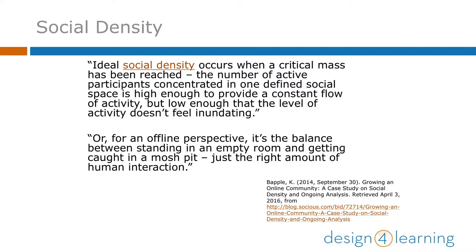I really like this definition from a blog post by Katie Bappel, so let me just read it here. Ideal social density occurs when a critical mass has been reached. The number of active participants concentrated in one defined social space is high enough to provide a constant flow of activity, but low enough that the level of activity doesn't feel inundating. Or, for an offline perspective, it's the balance between standing in an empty room and getting caught in a mosh pit — just the right amount of human interaction.